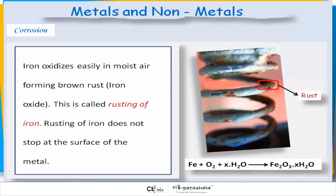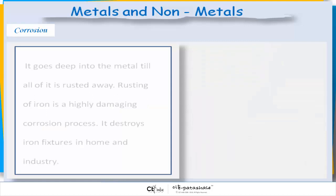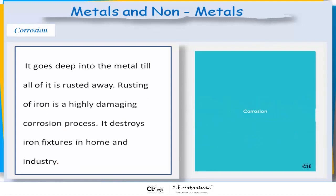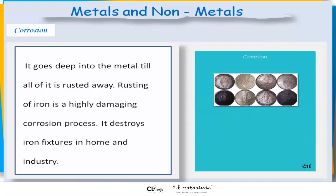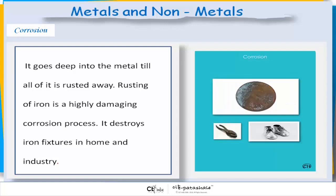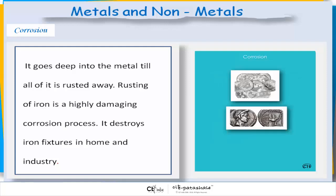Rusting of iron does not stop at the surface of the metal. It goes deep into the metal till all of it is rusted away. Rusting of iron is a highly damaging corrosion process — it destroys iron fixtures in homes and in industries.